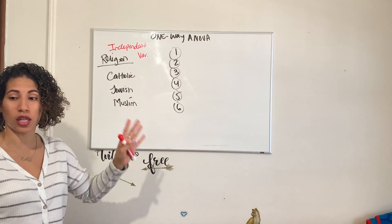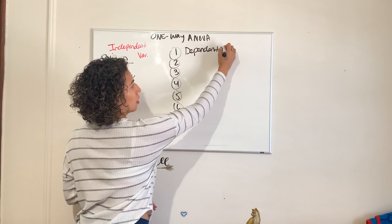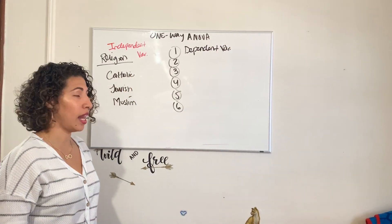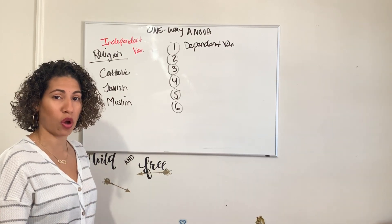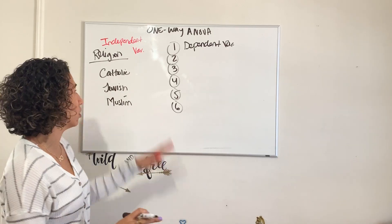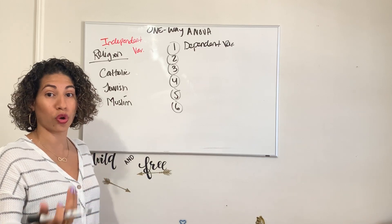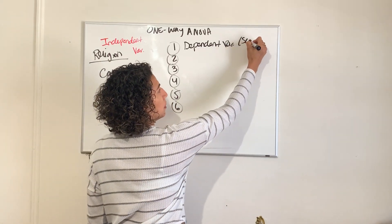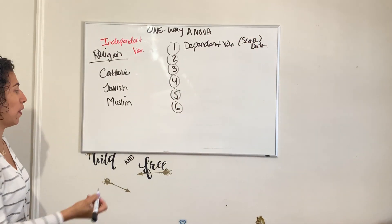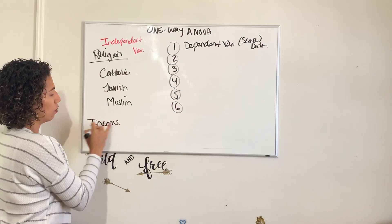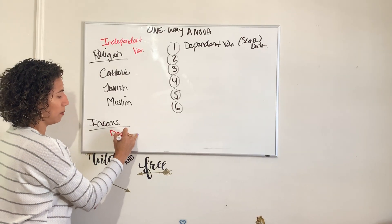The dependent variable has to actually be scale data. It should be interval or ratio data that leads to numbers as results like age or temperature, not gender or religion because those lead to categories. It should lead to something like your age or your income. So if we were looking at our dependent variable, what do I want to know about my religions? Who makes more money? So income now becomes our dependent variable.